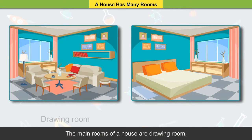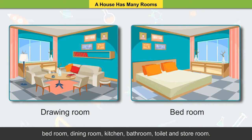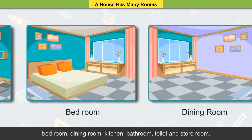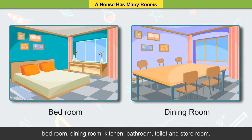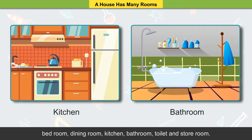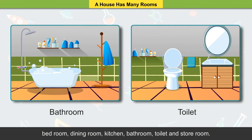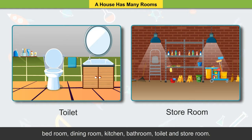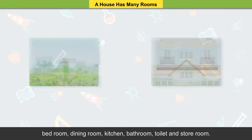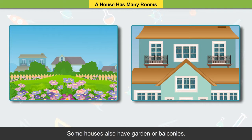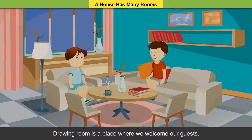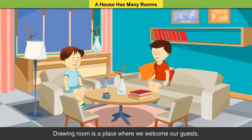The main rooms of a house are: drawing room, bedroom, dining room, kitchen, bathroom, toilet and storeroom. Some houses also have a garden or balconies.